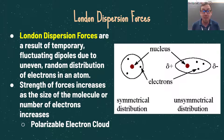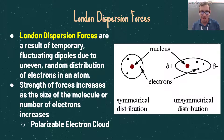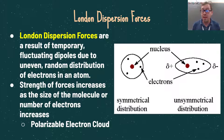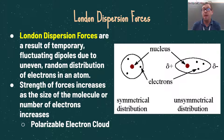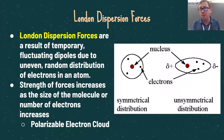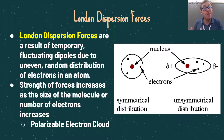London dispersion forces are a result of temporary fluctuating dipoles due to the uneven random distribution of electrons in an atom. Electrons don't cleanly orbit around the nucleus in nice little orbits — they exist in three-dimensional regions known as orbitals and they move randomly. As a result, those electrons could at one particular point be on one side of the atom, while we have few or no electrons on the opposite side, creating a temporary dipole.